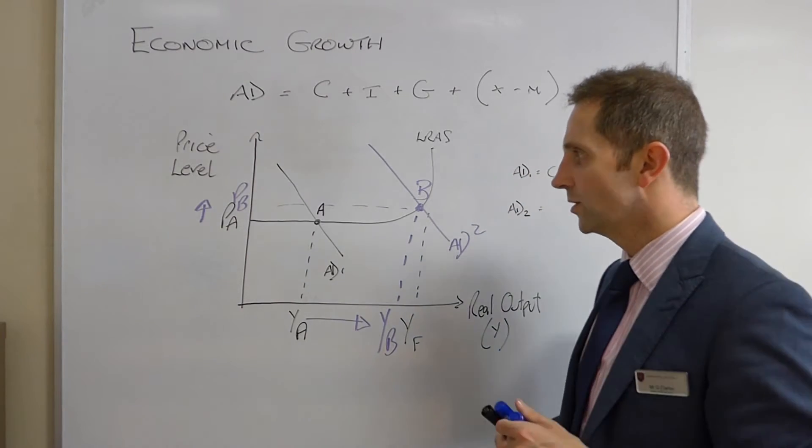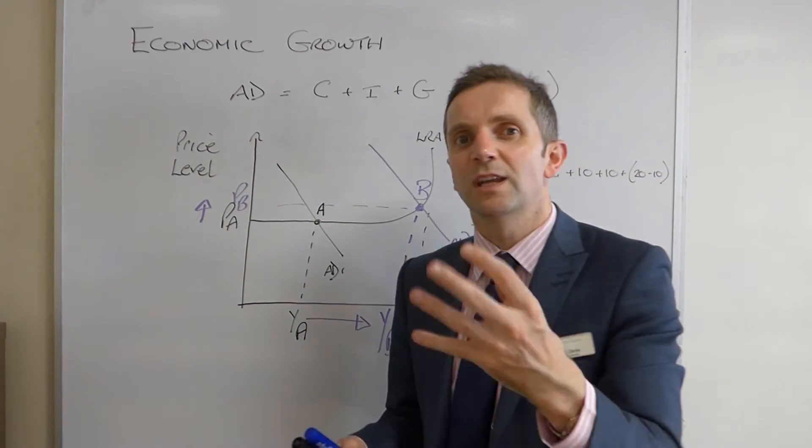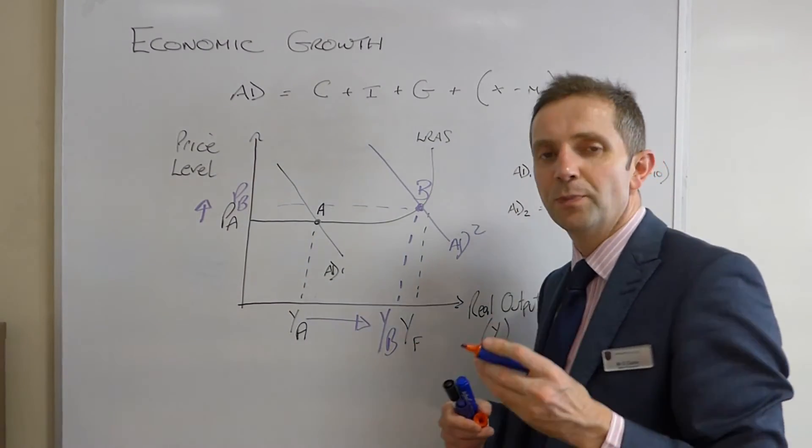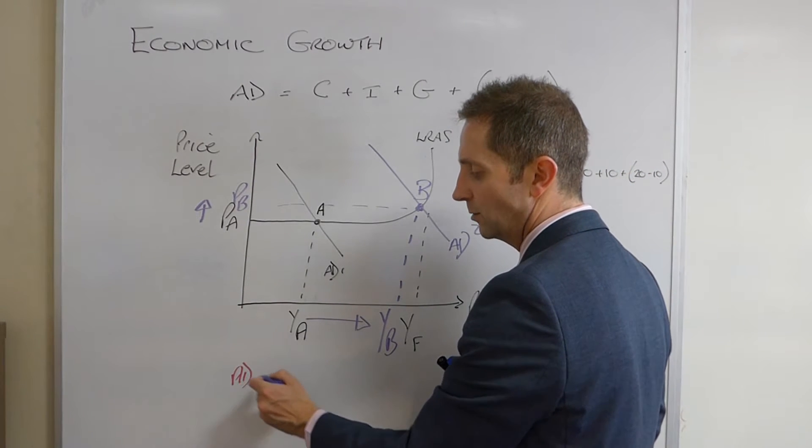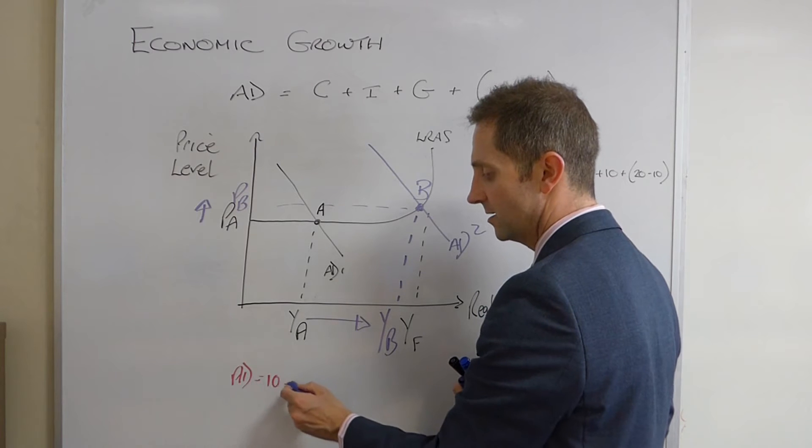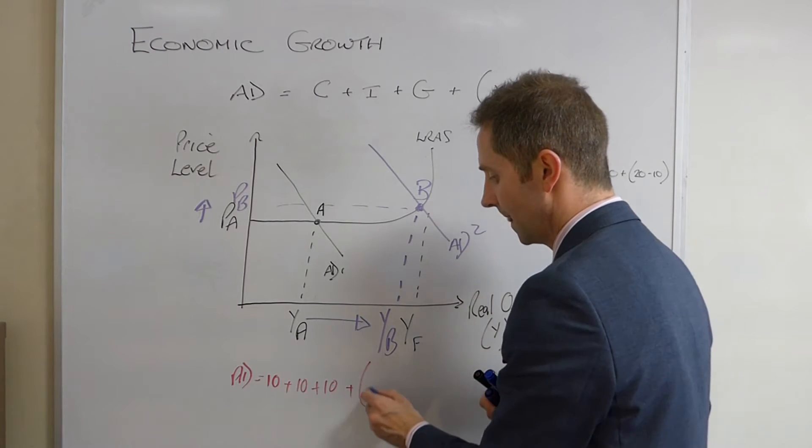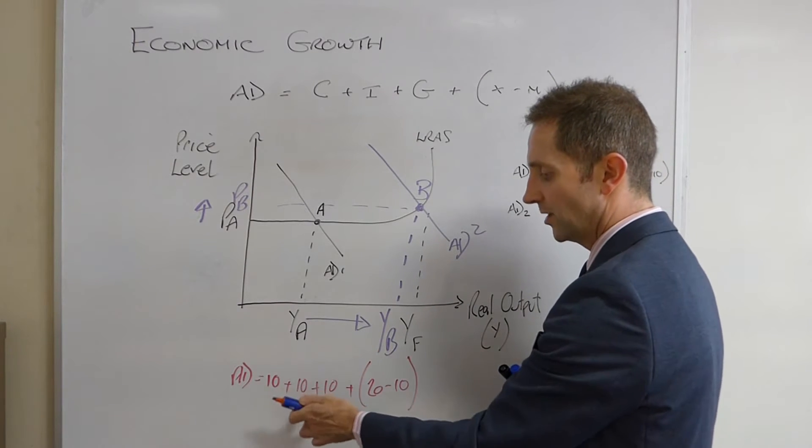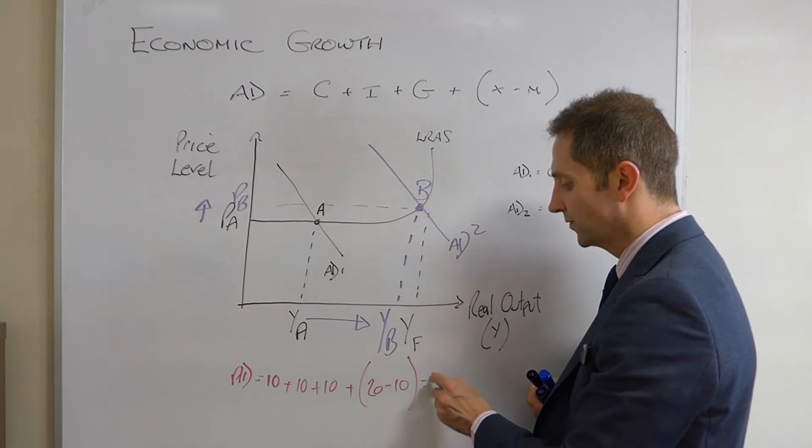So, what he used to do was, he used to say to himself, right, okay, if AD is equal to C plus I plus G plus X minus M, I'm going to put some numbers in there for you, Mr. Examiner. So, I'm going to say AD is equal to, let's say, C is 10, plus 10, plus 10, so that's CIG plus 20 minus 10. So, that's C plus I plus G plus X minus M, 30 plus 10 equals 40.